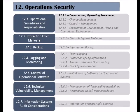The eighth clause of the ISO 27002 standard is called Operations Security. It has seven categories and 14 controls, and the first category is called Operational Procedures and Responsibilities. The purpose of this category is to ensure that information processing and related facilities are operated safely.